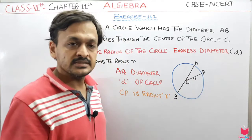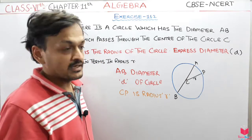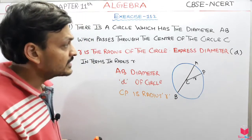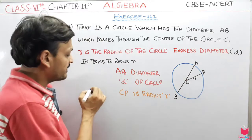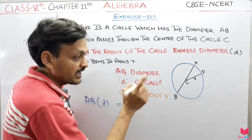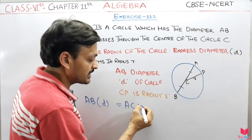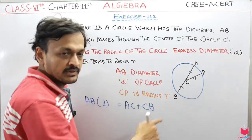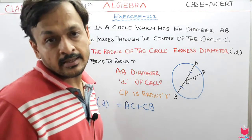ठीक है, यह हो गया। अब एक चीज सोचो कि हमें क्या निकालना है — diameter of the circle in terms of radius R। पहले इसको लिखते हैं फिर समझते हैं। हमें diameter को represent करना है। A और B यह हमारे पास diameter है — यानि A, B किससे मिलके बना है? A, C और C, B से मिलके बना है।